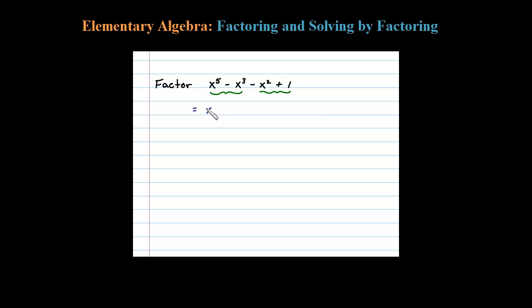When we group the first two terms, the GCF looks like x to the third. If we factor out x³, what's left is x² - 1. Now for the second two terms, it looks like the common factor here is 1, but in fact I'm going to factor out a negative 1.